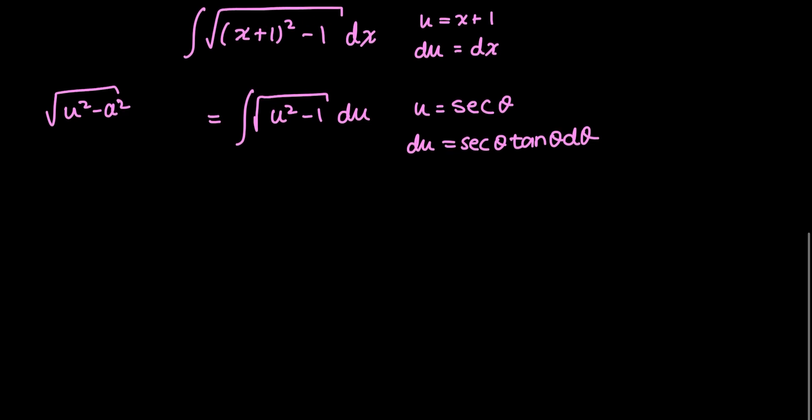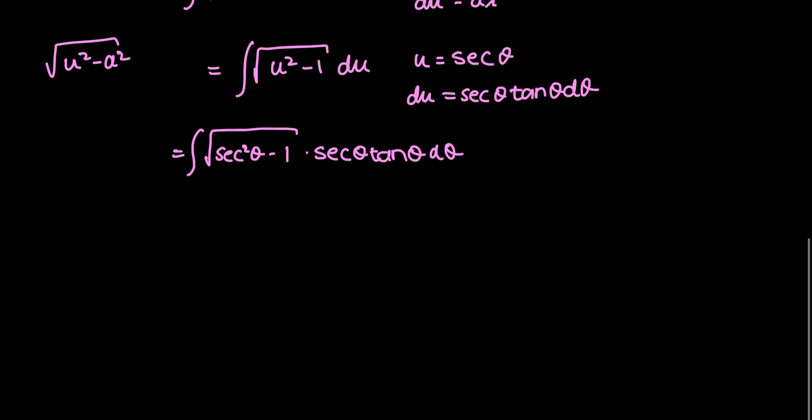Plugging this all back into my integral, I get that this is the integral of the square root of secant squared theta minus 1 times du, which is secant theta tan theta d theta. Using my trig identity, I can simplify this square root term because secant squared theta minus 1 is equal to tan squared theta. And so, the square root cancels with the square, so I end up with the integral of tan theta times secant theta tan theta d theta.